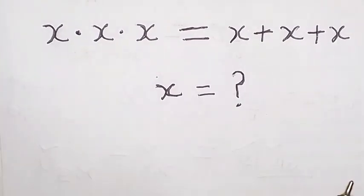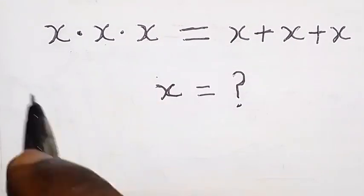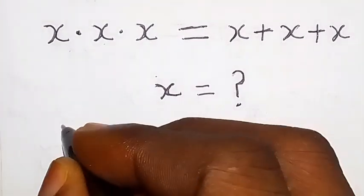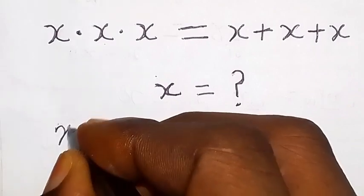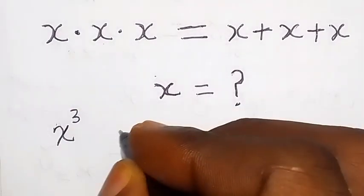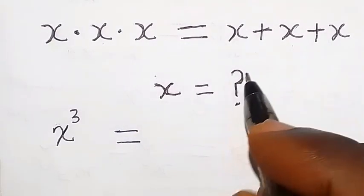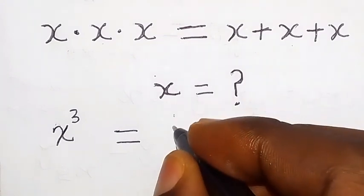Here in this class, we want to look at the solution to this, finding the value of x. We have x times x times x on this side, and we can also write that one as x cube, that is x raised to power 3. Then equals to, on this side, we have x plus x plus x. That is simply 3x.